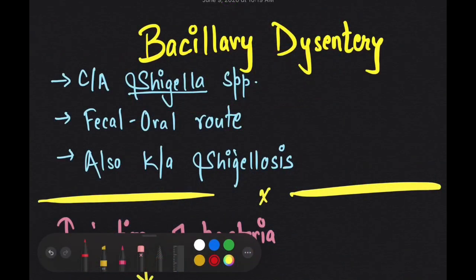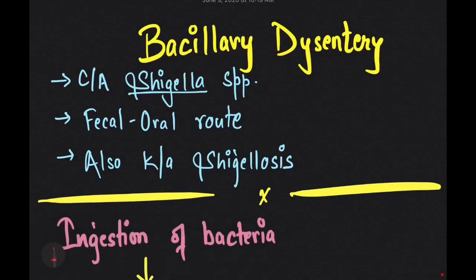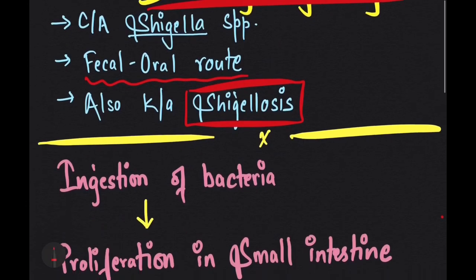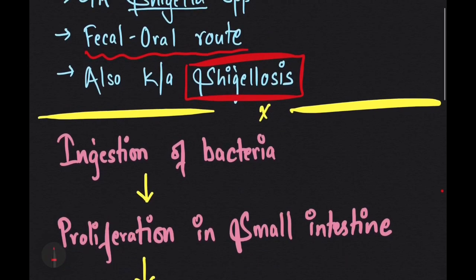Moving towards bacillary dysentery, the causative agents are gram-negative rods of the genus Shigella. They are also spread through the feco-oral route and the disease condition is also known as shigellosis. The pathogenesis involves ingestion of bacteria through feco-oral contamination.